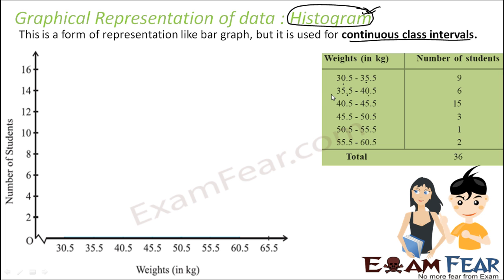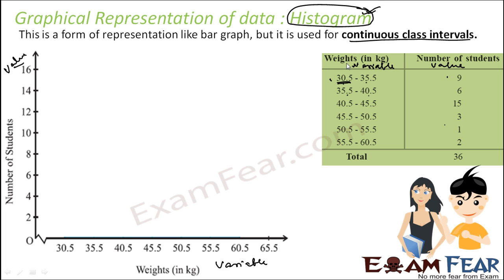In this case we will assume 1 cm represents 5 kg. Looking at the range, the number of students goes from 1 to 15, so we will have 1 to 15 on the y-axis. The variable is on the x-axis and the value is on the y-axis. The variable goes from 30.5 to 60.5.